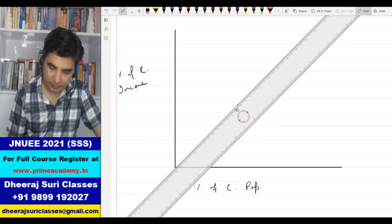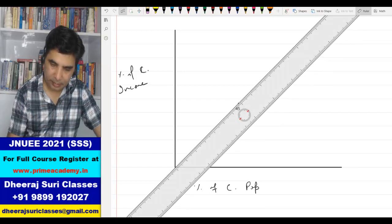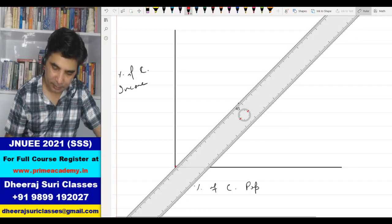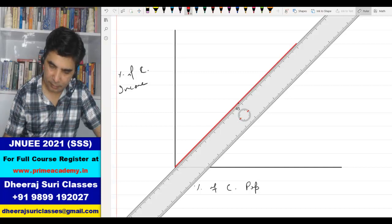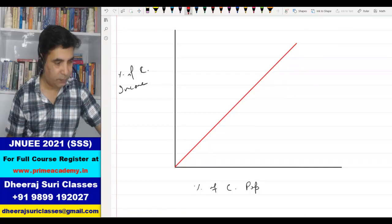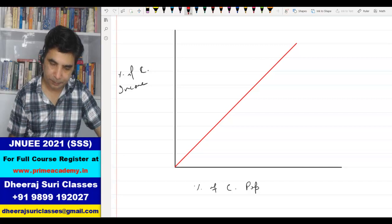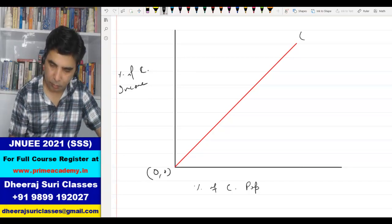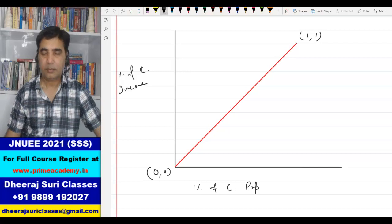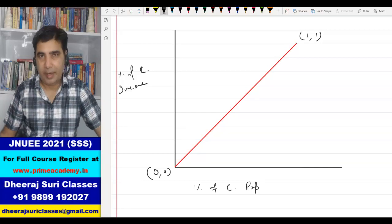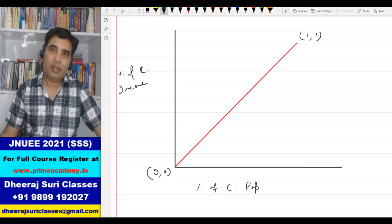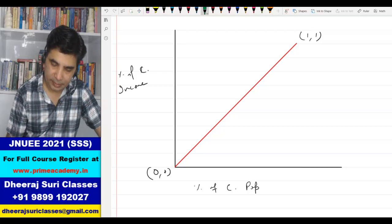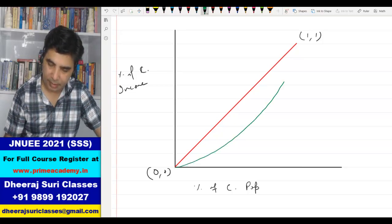Then we draw the line of equality, suppose this is the line of equality and it goes from 0,0 to 1,1. And the Lorenz curve is something like this, this is the Lorenz curve for example.